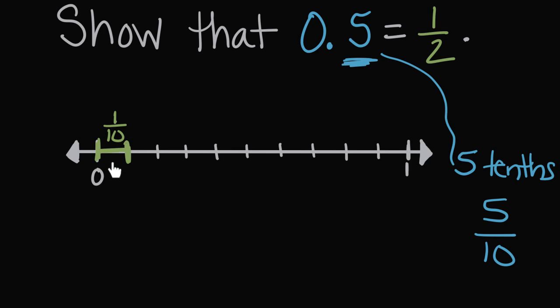If this distance is one tenth, if we travel another one, we've gone two of the tenths, two of the ten equal spaces. So to get to five tenths, we're gonna travel one, two, three, four, five of the tenths.